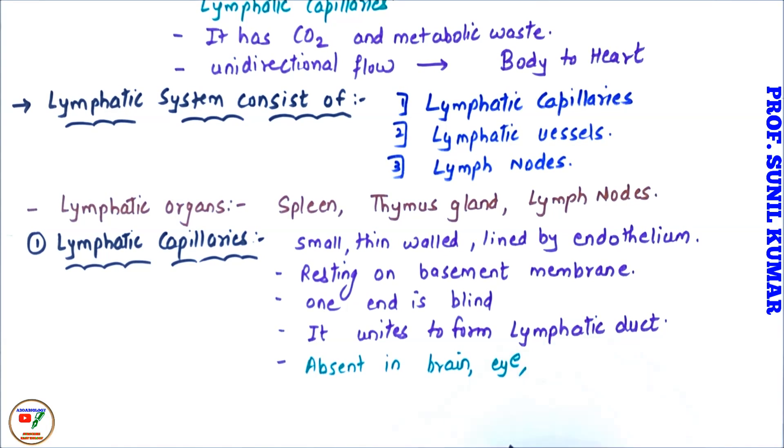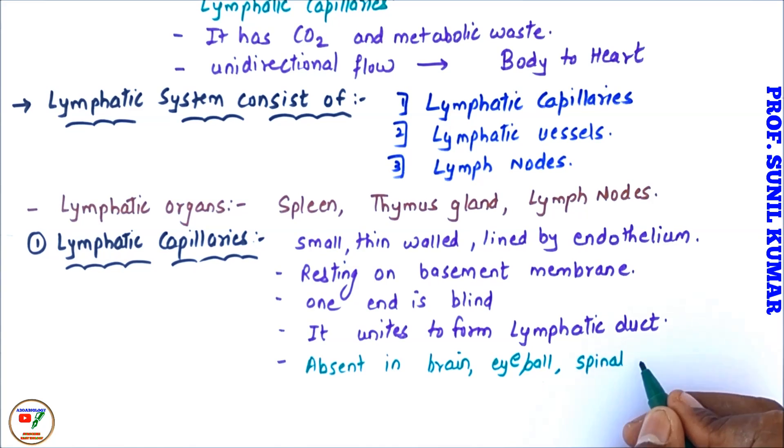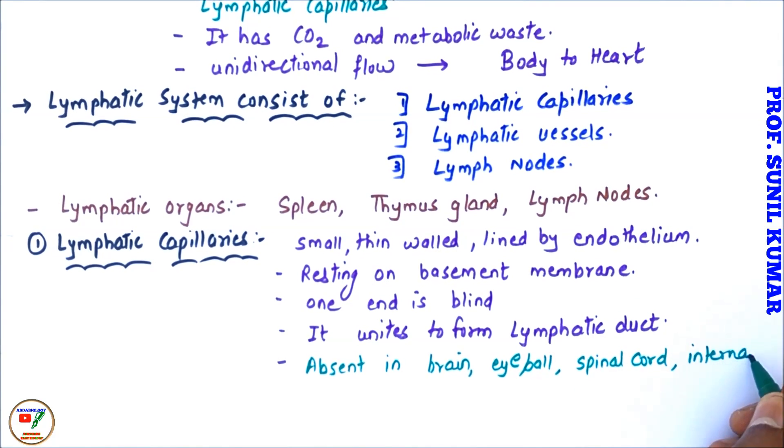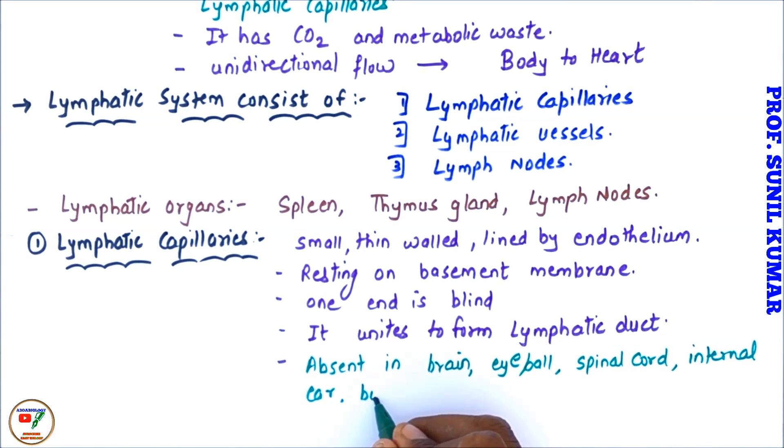But the most important point that we need to understand with respect to NEET exam: lymphatic capillaries are absent in brain, eyeball, spinal cord, internal ear, bone marrow, etc. This is what we need to understand.